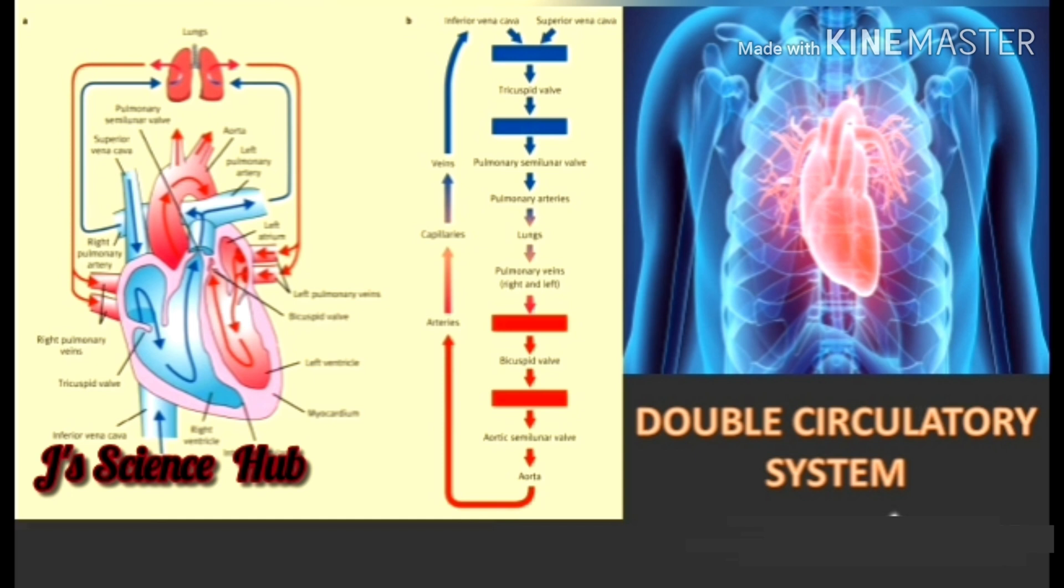Aorta divides into multiple arteries and these arteries are further divided into capillaries and supply the oxygenated blood to the cells. Cells engage in cellular respiration and the deoxygenated blood is brought back to the capillaries. These capillaries join to form the veins.